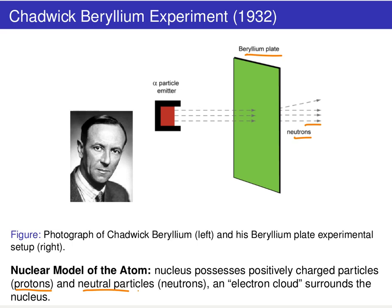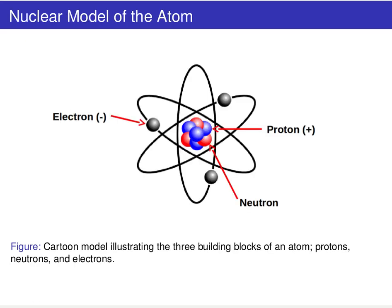And then a corresponding electron cloud surrounds the atom. This gave rise to the models of the atom many of you have seen — on t-shirts and in the media everywhere — with electrons appearing to orbit the nucleus.